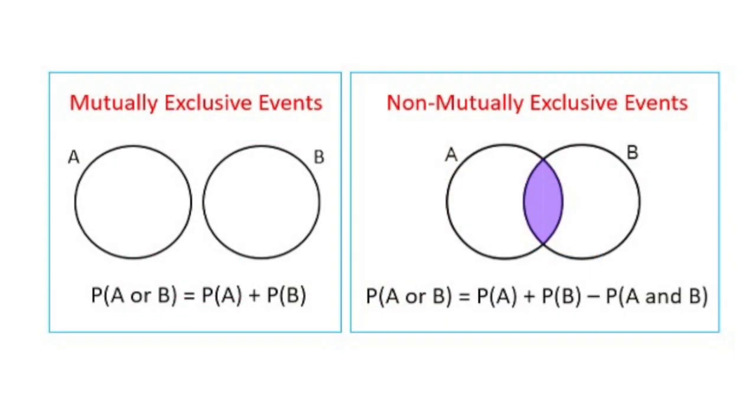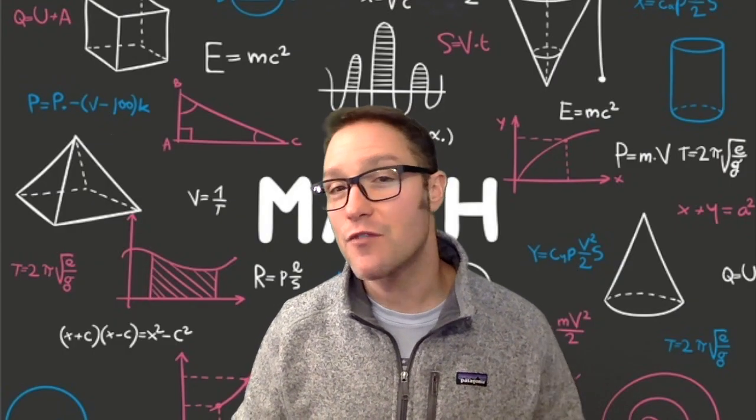Aha! Now see if you noticed this. The two formulas are really the same if you remember that the probability of A and B equals zero when A and B are mutually exclusive. When you see OR, you should think of addition.